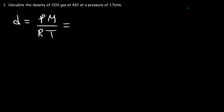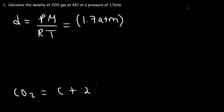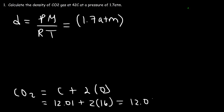So now let's plug in what we have. The pressure is 1.7 atm. Now we need to calculate the molar mass of carbon dioxide. So that's carbon plus 2 oxygen atoms. The atomic mass of carbon is 12.01, and the atomic mass of oxygen is 16. So 2 times 16 is 32, and 12.01 plus 32 is 44.01.